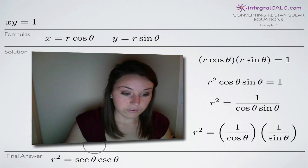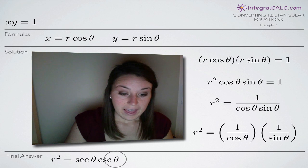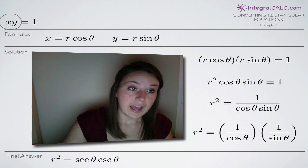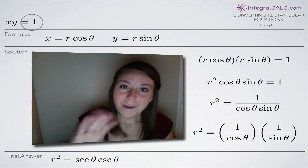But in this case, our final answer is r squared equals secant of theta times cosecant of theta and this is exactly equal to our rectangular equation x times y equals 1. I hope that helped you guys and I'll see you in the next video. Bye!